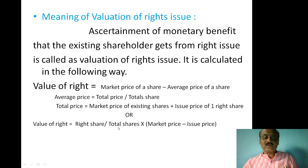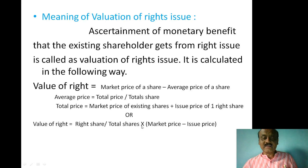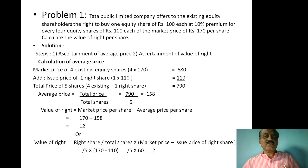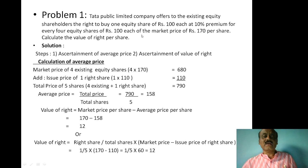Total shares includes existing shares plus right shares. So the alternative formula is: value of right share equals right shares divided by total shares, multiplied by market price minus issue price. This formula gives the value of the right issue.